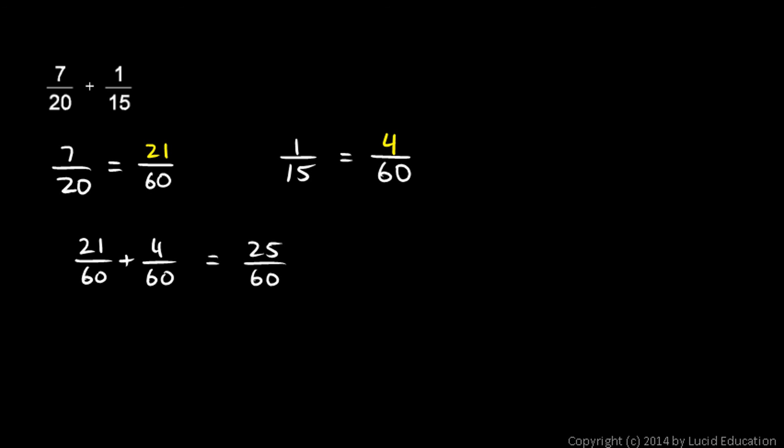And that's my answer, but I need to reduce it to simplest form. I can see that 25 and 60 are both divisible by 5. So let's divide the top and the bottom by 5, and 25 divided by 5 is 5, and 60 divided by 5 is 12. So 5 over 12. That's my answer.